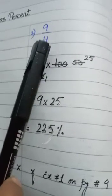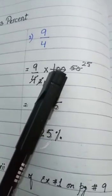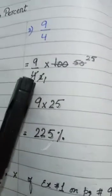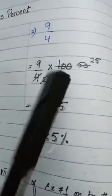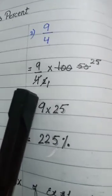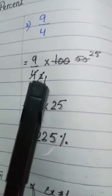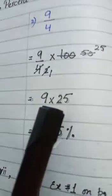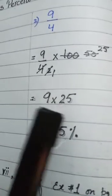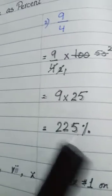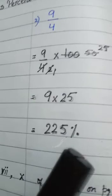The next question is 9 upon 4. Multiply 9 upon 4 by 100. In the numerator we have 9 and 100, and in the denominator we have 4. We can simplify 4 and 100 using the table of 2: 2 twos are 4, and 2 fifties are 100. After the first simplification, numerator has 50 and denominator has 2. Simplify again using table of 2: 2 ones are 2, and 2 twenty-fives are 50. Now numerator has 9 and 25, denominator is 1. So 9 multiplied by 25 is 225, and the answer is 225%.